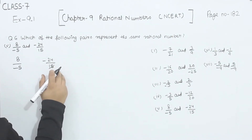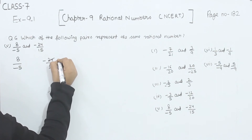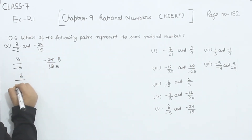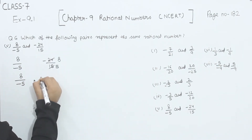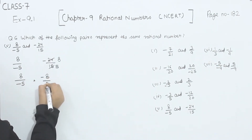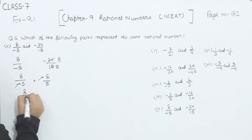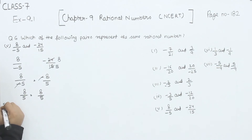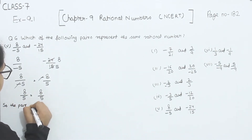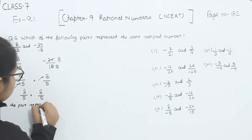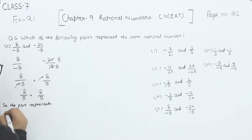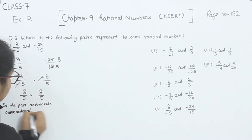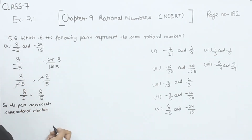Dividing 24 by 15 by 3 gives 8 by 5. Now comparing 8 by minus 5 and 8 by 5, the pair represents the same rational number.